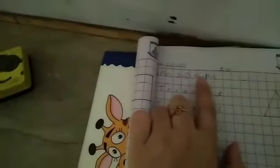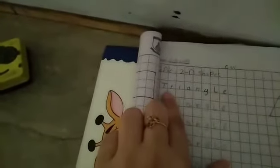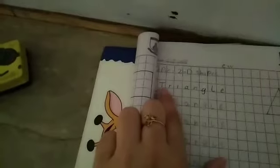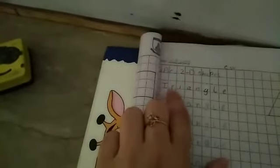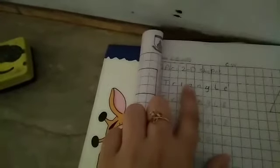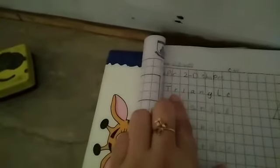First of all, you write the topic. So our topic is 2D shapes, so you write triangle. You have to write one letter at a time so that it is neat.